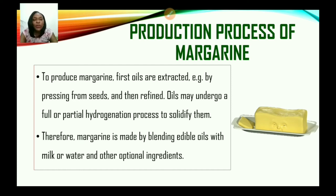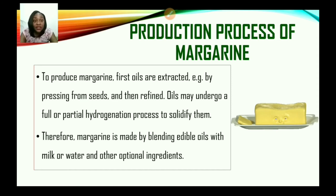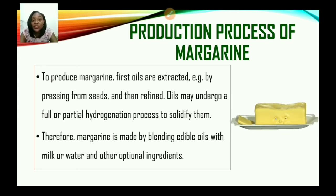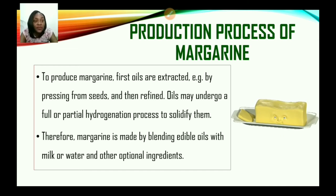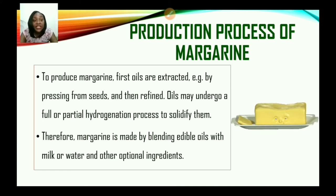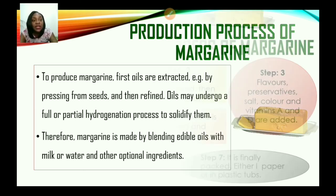Now let us look at the production process of margarine. To produce margarine, first oils are extracted — for example by pressing from seeds — and then refined, as we looked at with soybeans. Oils may undergo a full or partial hydrogenation process to solidify them. Therefore, margarine is made by blending edible oils with milk or water and other optional ingredients.